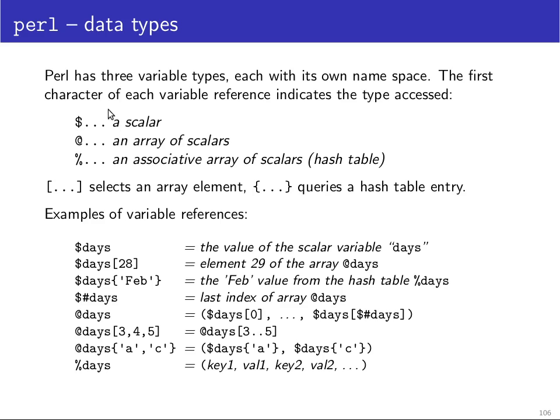So there is one namespace for scalar variables, there is a namespace for array variables and there is a namespace for hash tables. And as a result, in the same program, you can have with $days a scalar variable and with @days an array and with %days a hash table of the same name. To refer to an array element, you follow the name of the variable with square brackets, whereas to query a hash table, you use curly braces.